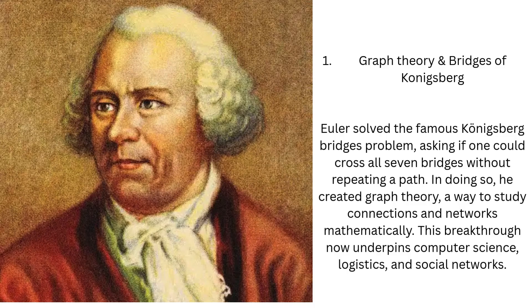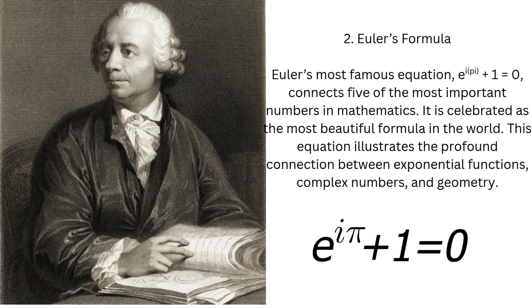Euler's simple curiosity about a city puzzle became a cornerstone of modern mathematics. Euler's Formula links e, i, pi, 1, and 0 in one elegant expression. It unites seemingly unrelated concepts — imaginary numbers, growth, and circular motion — into a single equation. Engineers, physicists, and mathematicians rely on it for calculus in fields ranging from electronics to quantum mechanics. Its elegance is admired for its simplicity and depth. Richard Feynman described it as the most remarkable formula in mathematics. Euler's formula proves that mathematics can be both beautiful and profoundly useful.